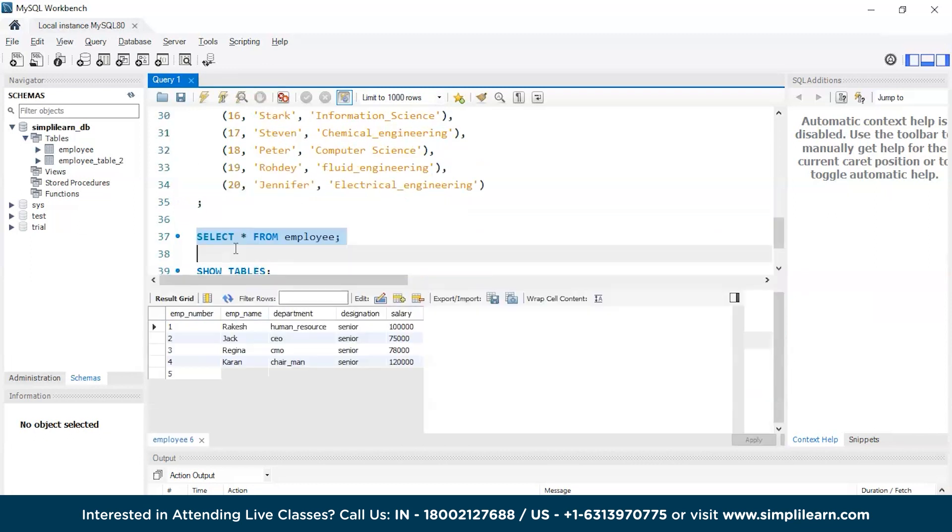And we have employee and employee table 2. We will be accessing the employee table which has the salary details. There you go - we have Rakesh, Jack, Regina, etc. Here you can see Karan has the highest salary and the next second highest salary is Rakesh. So we need to fetch this particular row.